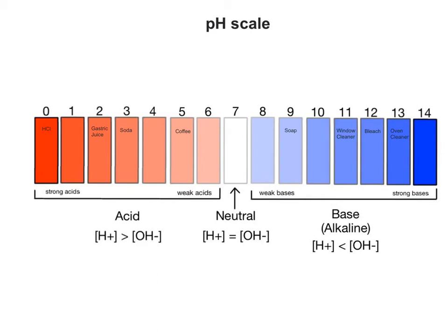Some pH values of common bases are soap with a pH of 9, window cleaner with a pH of 11, bleach with a pH of 12, and oven cleaner with a pH of 13. Out of these examples, soap is the weakest base, having the lowest pH above 7, and oven cleaner is the strongest base, having the highest pH.